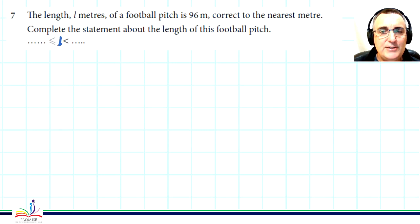Well, it's rounded to the nearest meter. So half a meter below, half a meter above is going to be the boundaries. So L is greater than or equal to 95.5, and L is going to be less than 96.5.